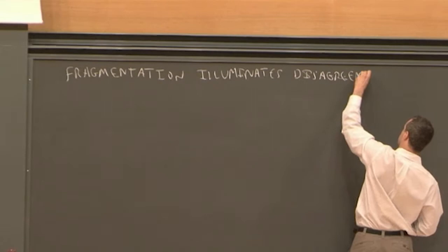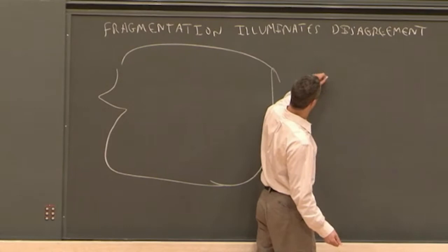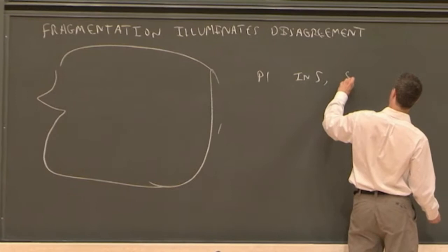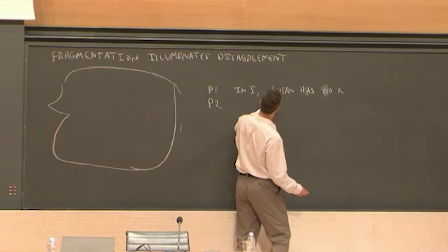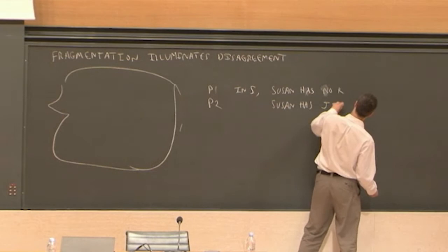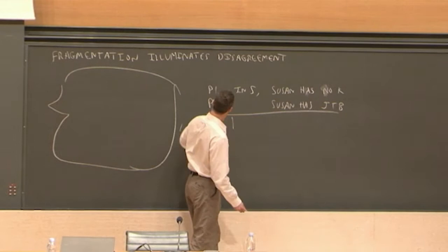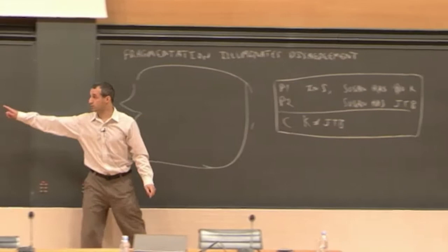Susan has an epistemologist friend. And the friend displays for her an argument. The argument that has its first premise: in S, Susan has no knowledge. Second premise: in S, Susan has justified true belief. Conclusion: Knowledge is not the same as justified true belief. The friend displays this argument to Susan in order to get her to resolve the latent incoherence in her beliefs in one way.